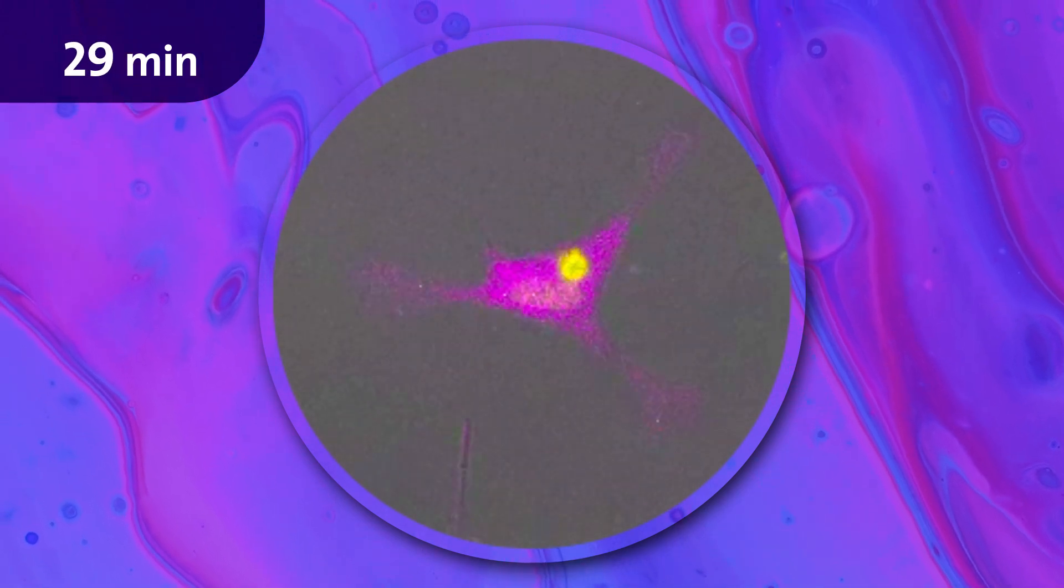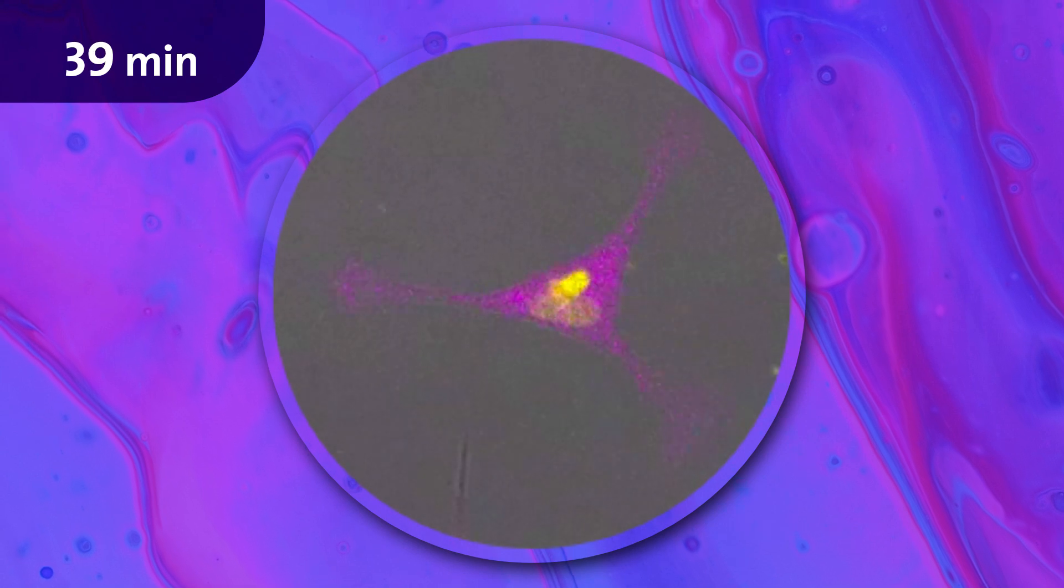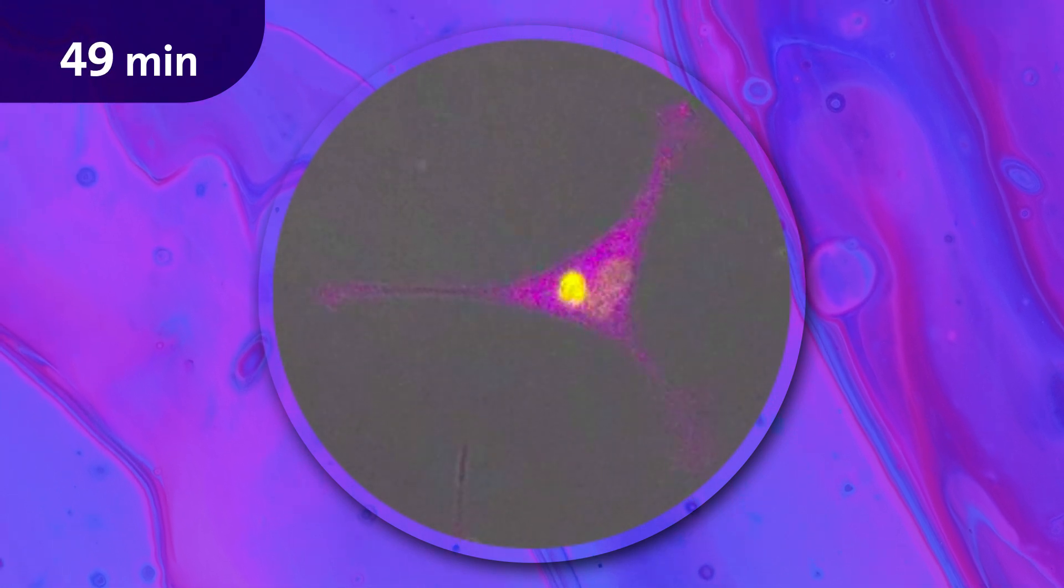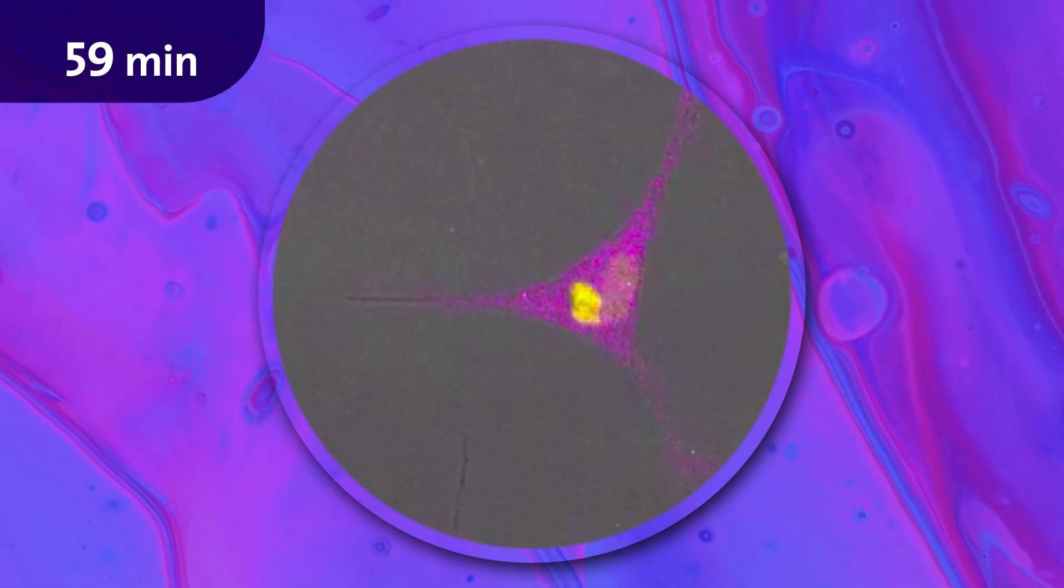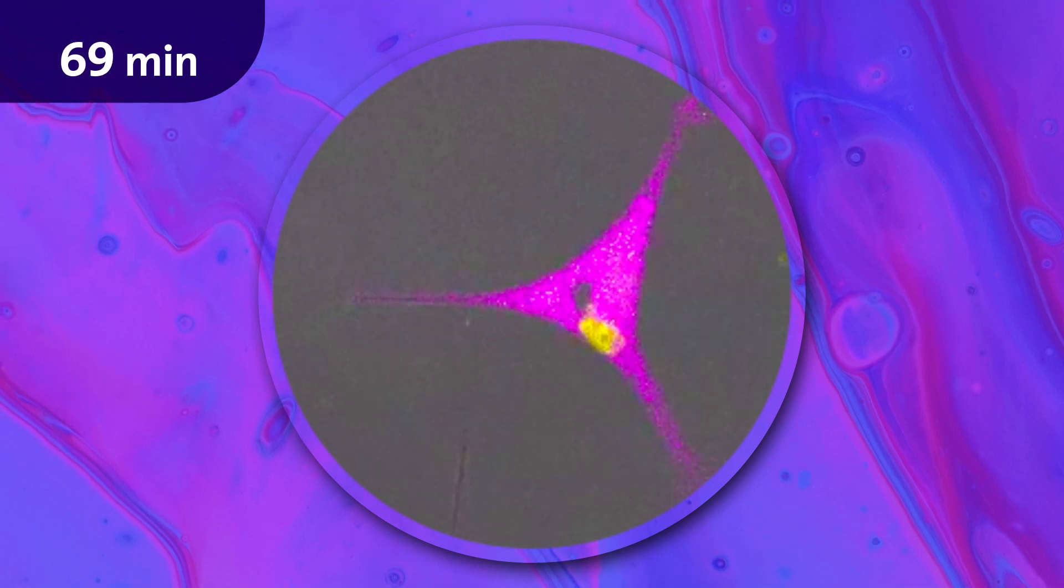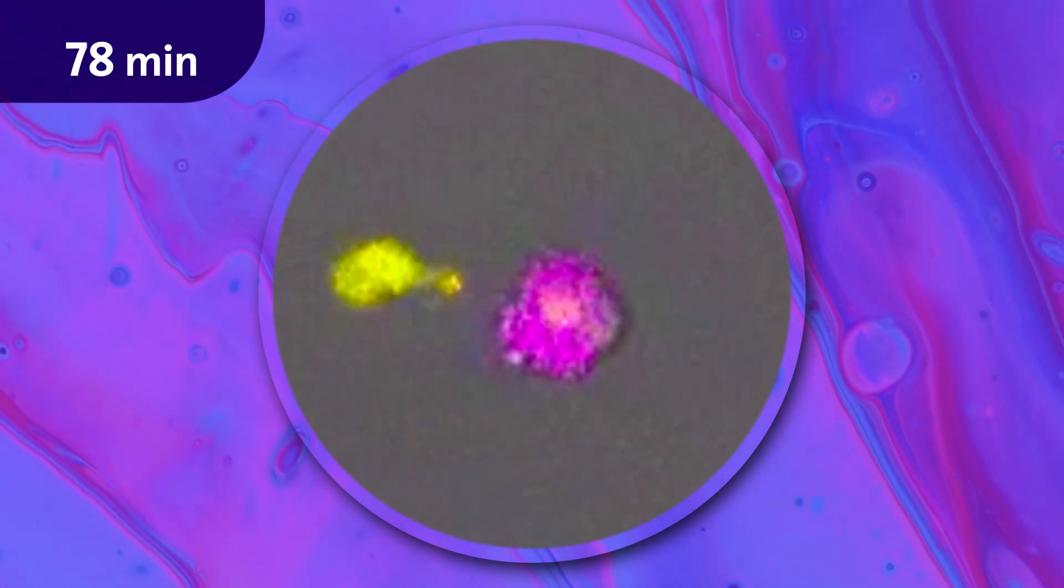This killing process often takes several hours and consists of several stages. The death is visible as rounding up of the tumor cell, followed by dynamic blebbing and disintegration.